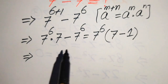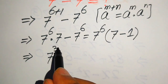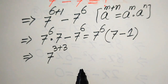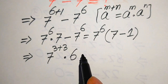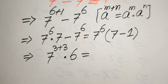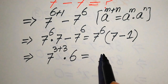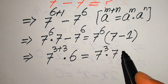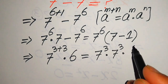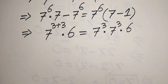In the next step, 7 minus 1 becomes 6. We write this as 7 to the power of 6 times 6. We then break 7 to the power of 6 as 7 to the power of 3 plus 3, and apply the exponent law again. According to this law, we can write this as 7 to the power of 3 multiplied by 7 to the power of 3.